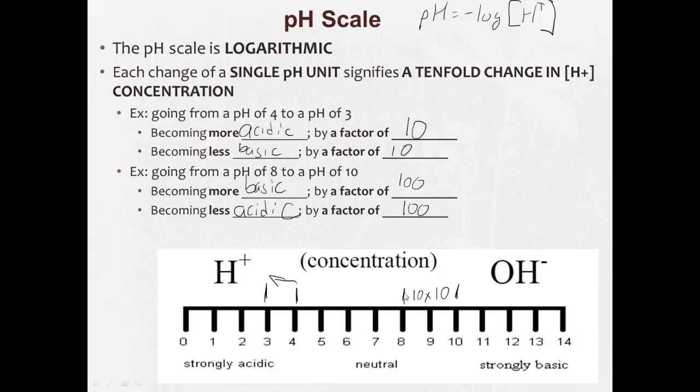Let's say we went from 6 all the way down to 3. Going 1, 2, 3 jumps, so it's 10 times 10 times 10. So going from 6 to 3 would be 1,000 times more acidic.